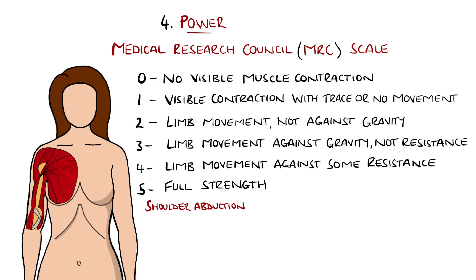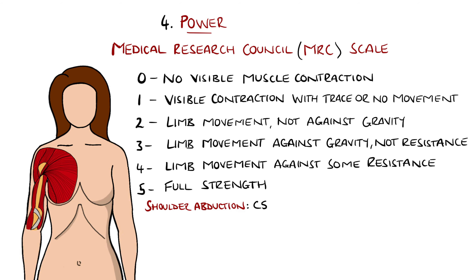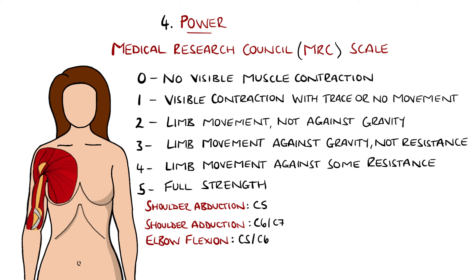For the upper limb, this is done by shoulder abduction for C5, tested by asking the patient to move their arms out to their sides with elbows typically bent, as you resist by pushing down. Shoulder adduction for C6 and C7, tested by asking them to move their arms down from abduction as you resist by pulling up. Elbow flexion for C5 and C6, where the patient places both arms in front with elbows flexed like a boxer's pose, resisting as you try to pull and extend the elbow. Elbow extension tests C7 and C8, done by asking them to push out against your resistance from the boxer's pose. Remember: C5, C6 — pick up sticks; C7, C8 — lay them straight.